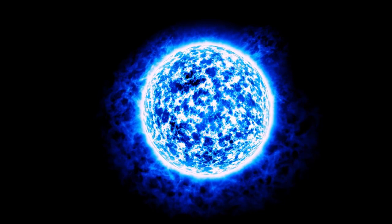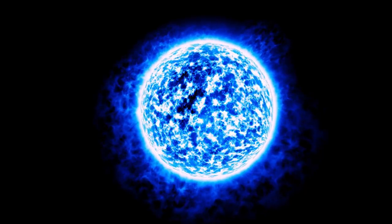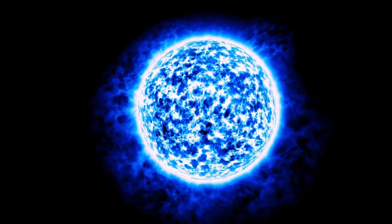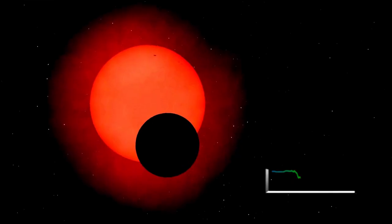This star is classified as a red supergiant, a type of massive star nearing the end of its life. Located around 642 light years from Earth, Betelgeuse is among the largest and brightest stars in our galaxy.